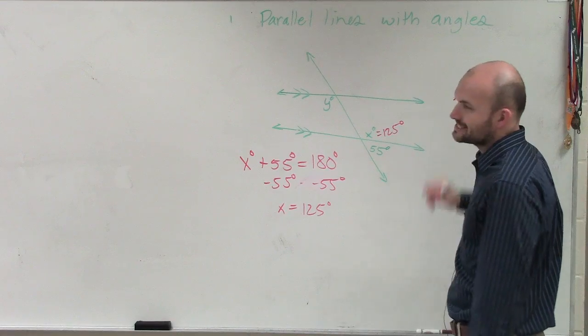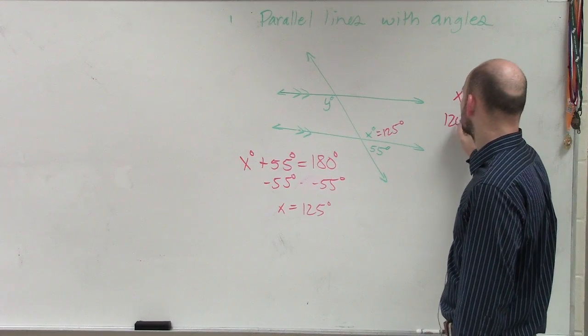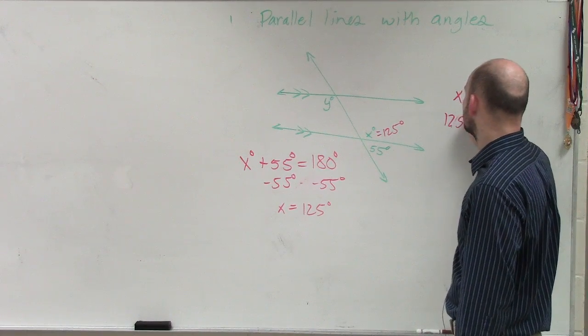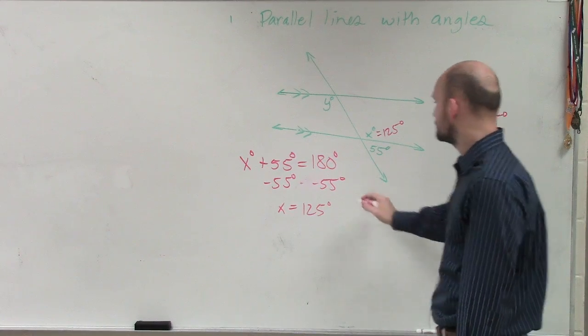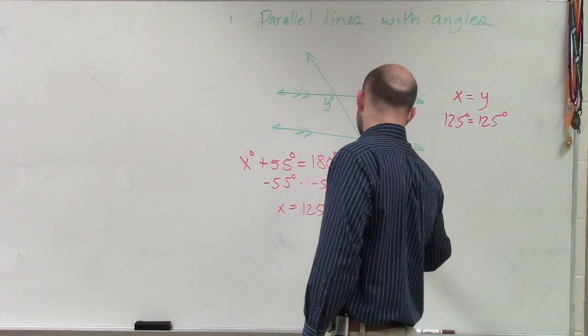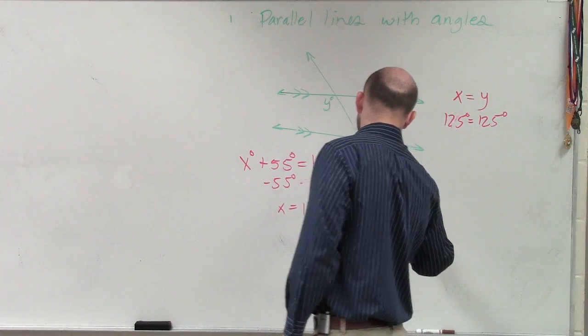So we know that x is equal to y. If x is equal to 125 degrees, well, then what does y have to equal? 125 degrees. So you can say y equals 125 degrees.